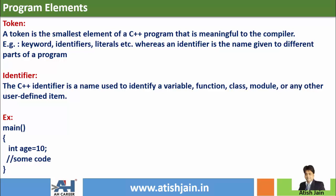For example, name is a token, int is a token, age is a token, 10 is a token — everything is a token. If we know that int is a data type, then age is an identifier. This age is a variable name, so it is an identifier. Main is an identifier — it is a function name. An identifier is nothing but any named entity in the program.